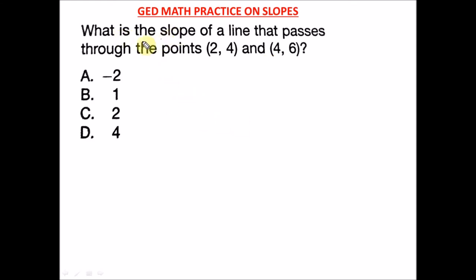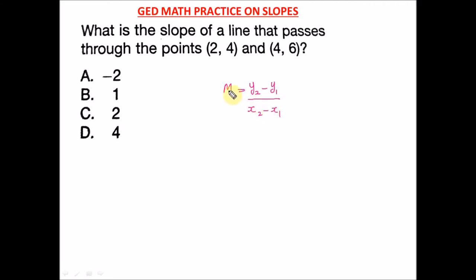So the first question says: what is the slope of a line that passes through the point? Remember your slope formula — it should also be on your formula sheet. Slope is represented as m, so slope m equals y2 minus y1 divided by x2 minus x1. This is the first point and this is the second point. Don't mix it up — that's where students get slope confused, sometimes picking points at random.